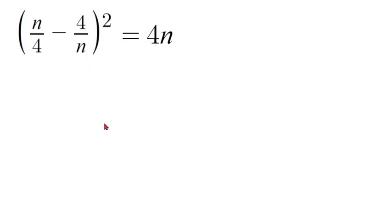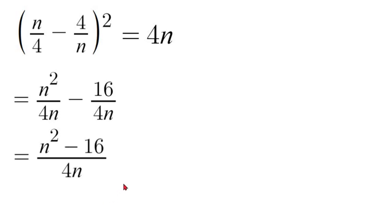So that's going to end up looking like n²/4n minus 16/4n. Now that our denominators are equal we can subtract our numerators so we have (n² - 16)/4n.